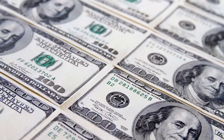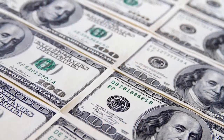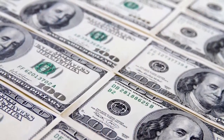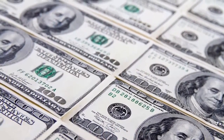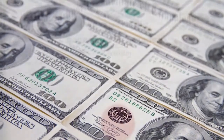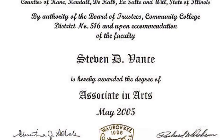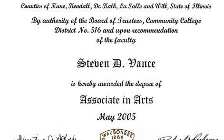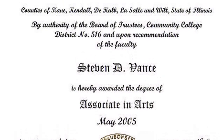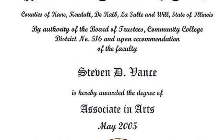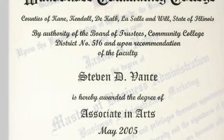The average US salary for a software engineer is $98,000. Some facts about computer software engineers are that 8% have an associate degree, and 75% have a bachelor's degree.